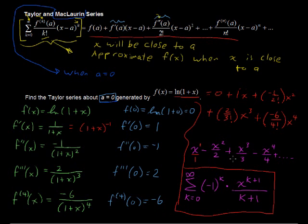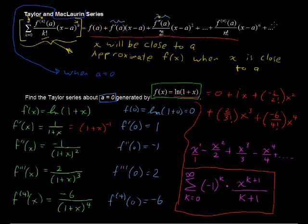This is our Taylor series expansion. From here you could use the first three or four terms to get a decent approximation of the function when x is close to 0 — for example, to approximate the natural log of 1.1. That's a little example of the Taylor and specifically the Maclaurin series.